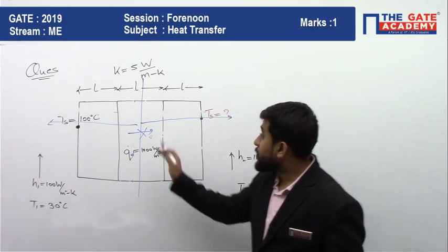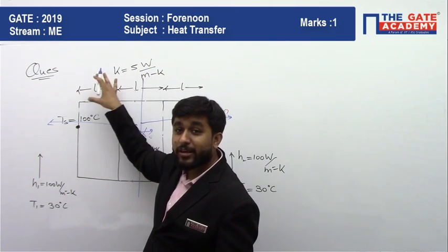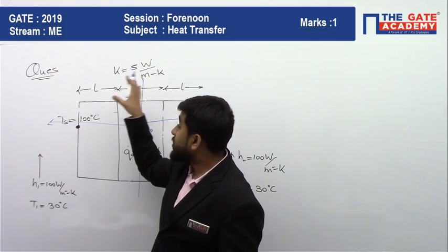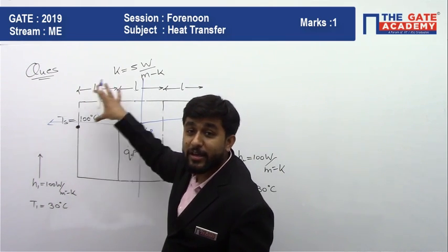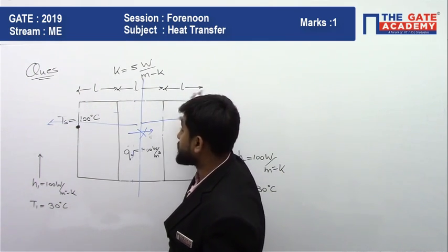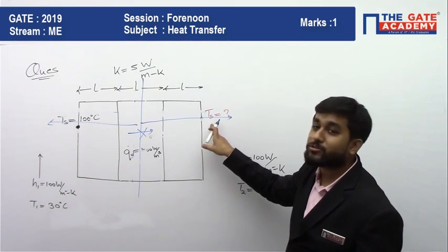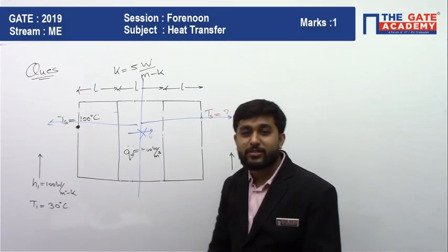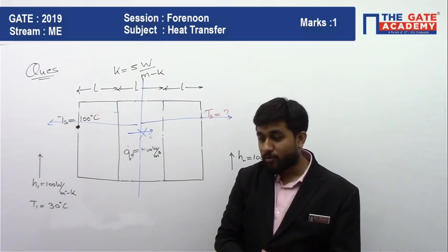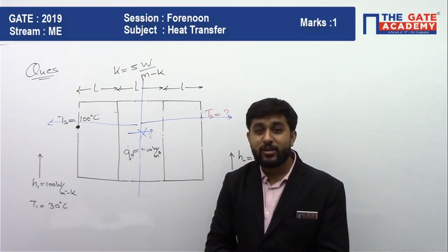For this intermediate section with maximum temperature, the left and right hand sides are mirror images. So whatever conditions are on the left, the same will be on the right. Here the temperature is 100 degrees Celsius, so the right hand side temperature will also be 100 degrees Celsius. The question is very simple — if you like it, share it with your friends. Thank you.